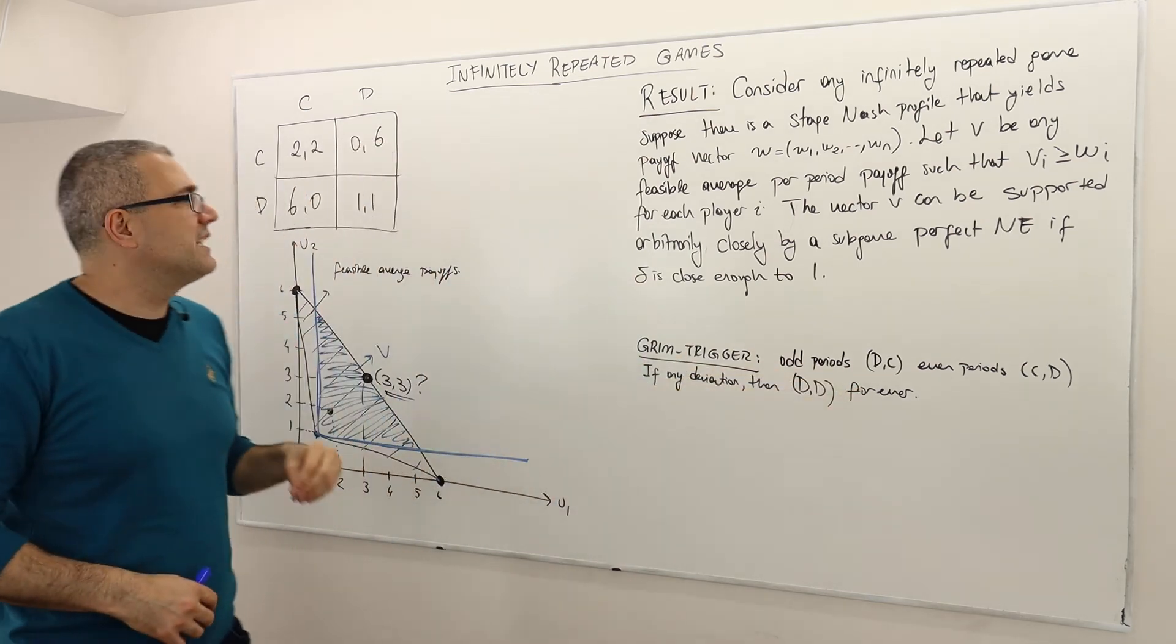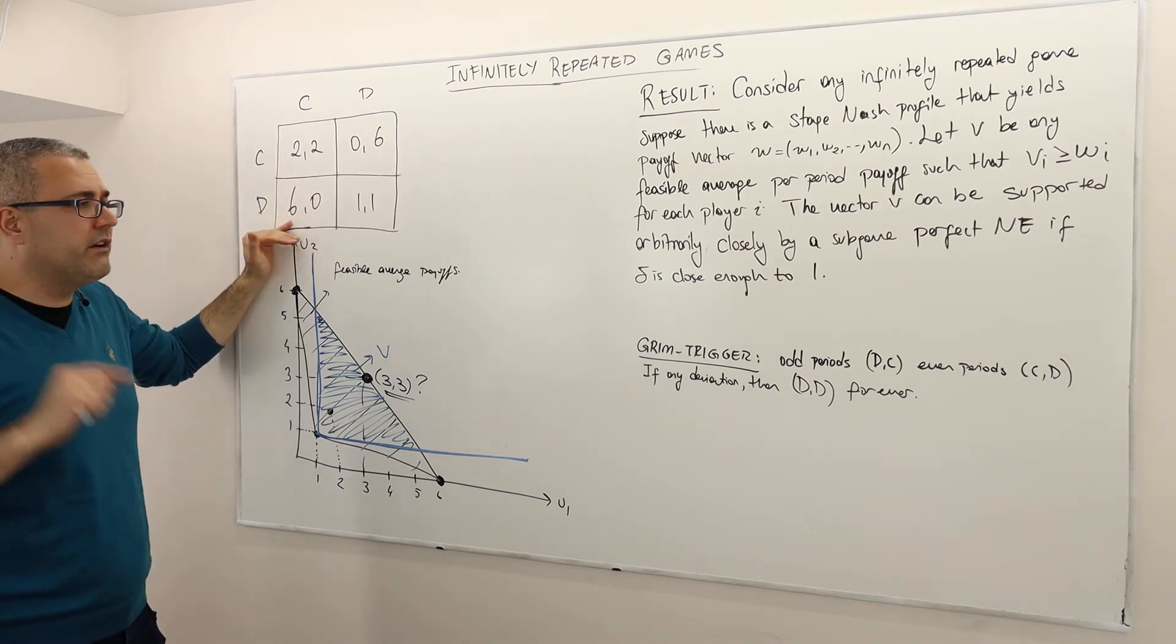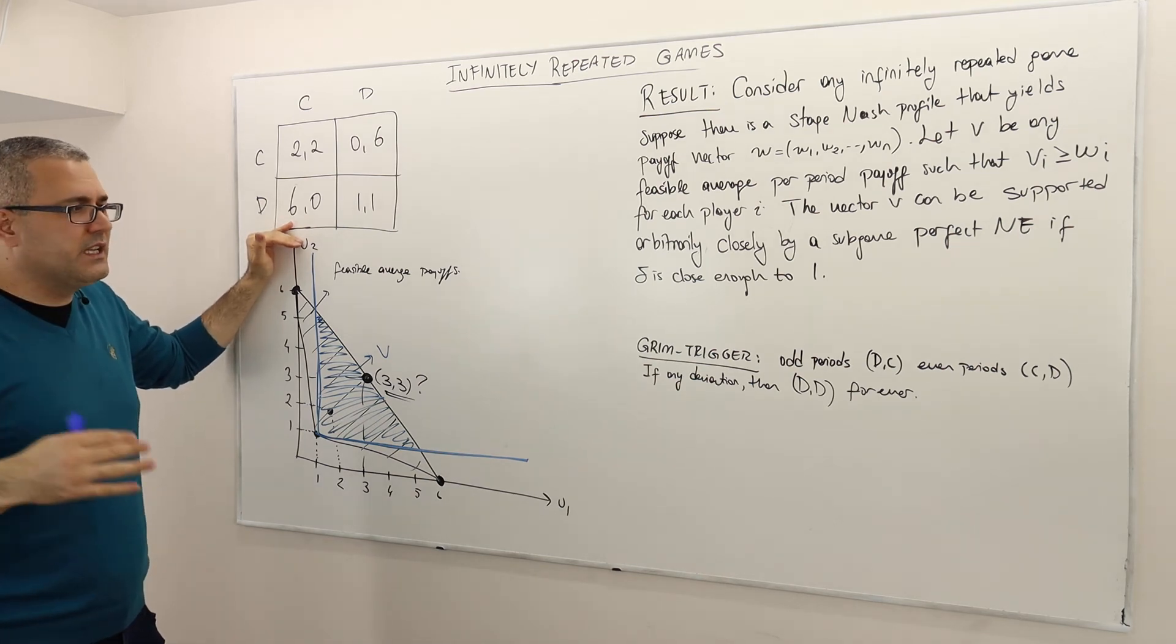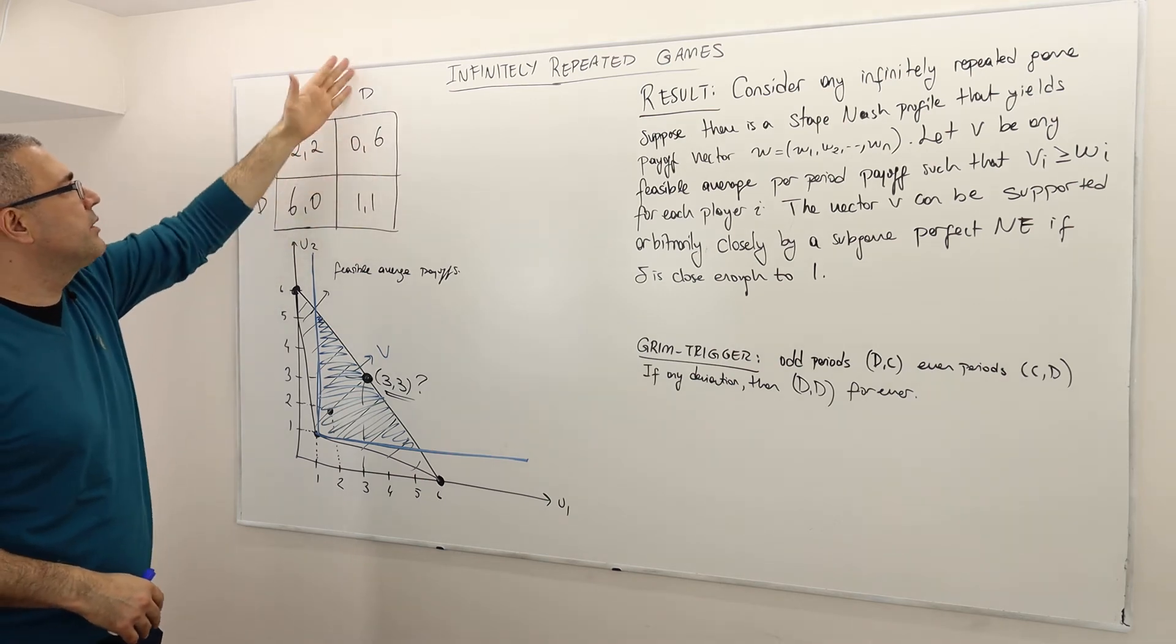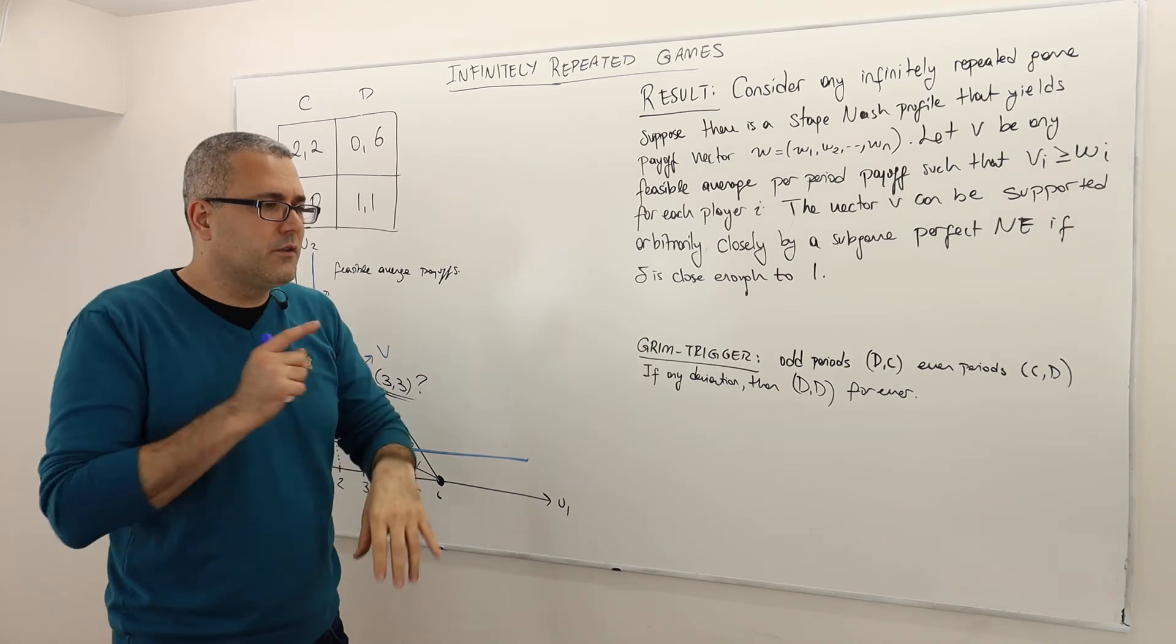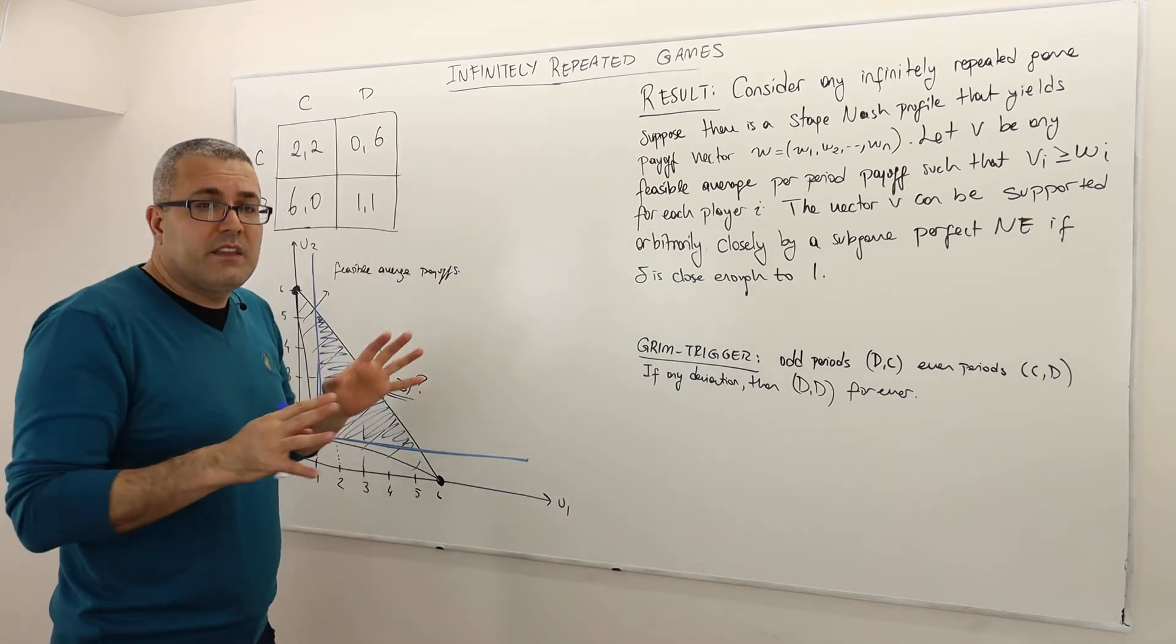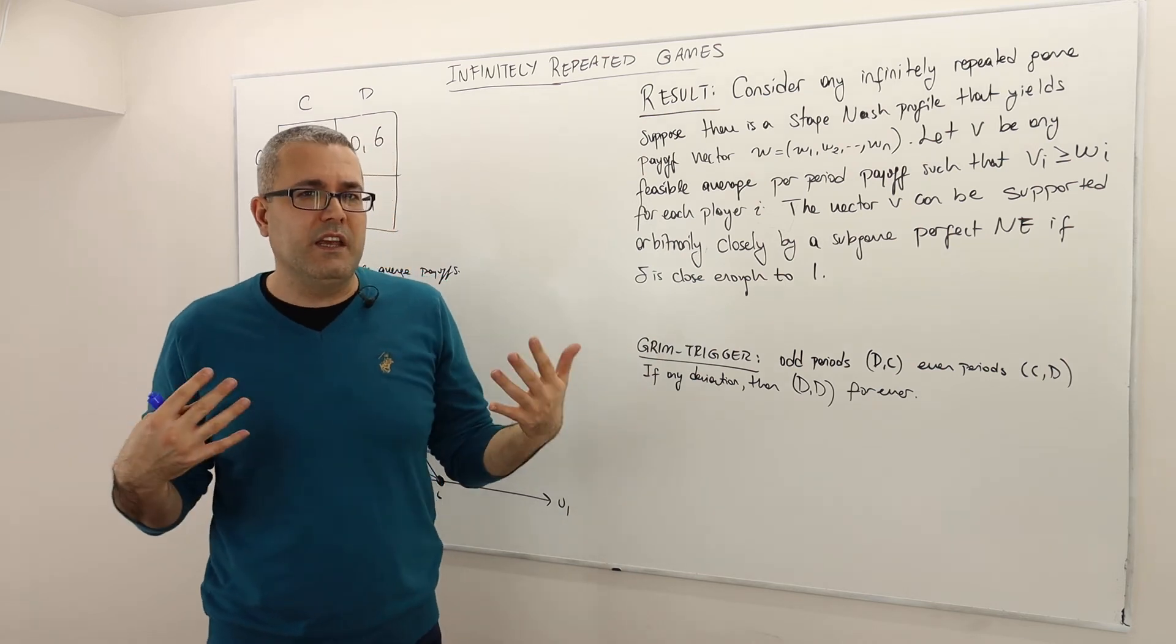On odd periods, the players are going to play D and C, meaning player 1 is going to play D, player 2 is going to play C on odd periods. On even periods, I'm going to assume period 0 is even, the first period is even. On even periods, they're going to play CD, meaning player 1 is going to play C, player 2 is going to play D, alright? So that's how they're going to coordinate. So this is period 100, so therefore we're going to play CD, alright? So the thing is, they're going to keep doing this as long as nobody deviates.